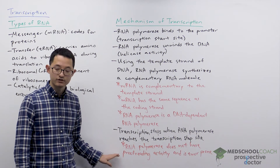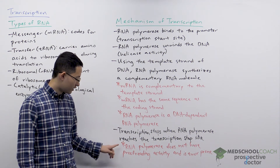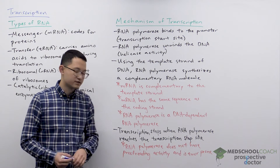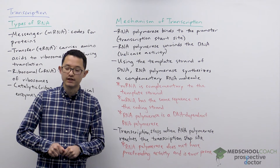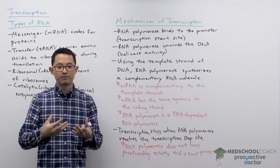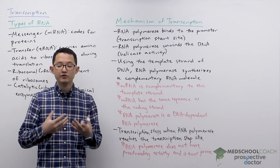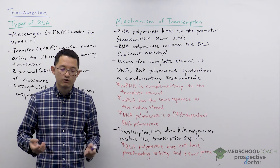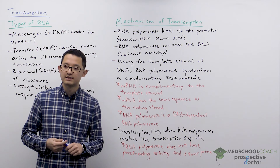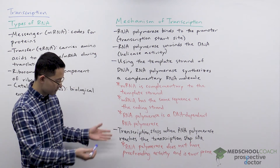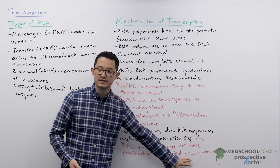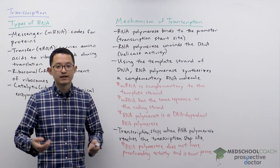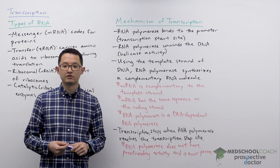One last important point: unlike DNA polymerase, RNA polymerase does not have proofreading activity. This means that when RNA polymerase is adding nucleotides to synthesize the RNA molecule, sometimes it will make mistakes. Because it makes mistakes, we say that RNA polymerase is error-prone. And if it makes mistakes, that means the translated protein may not be functional.